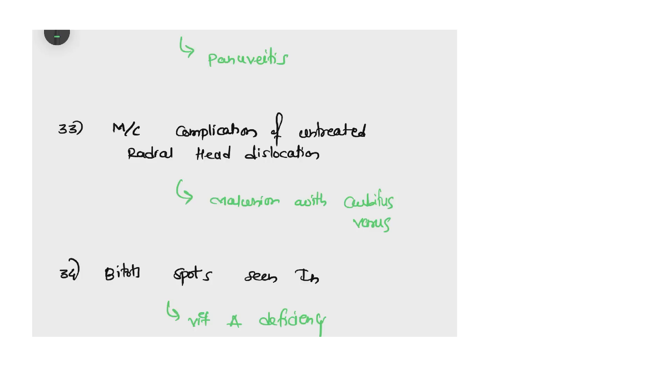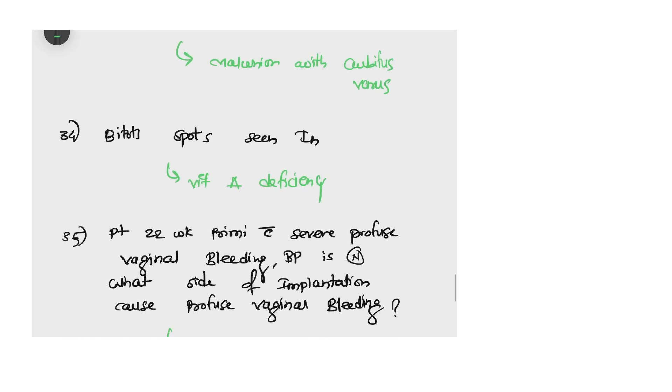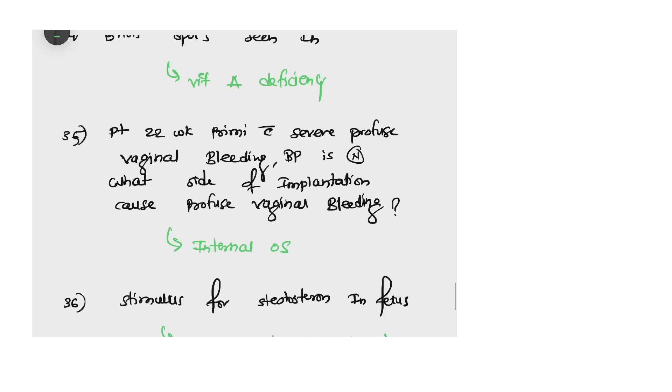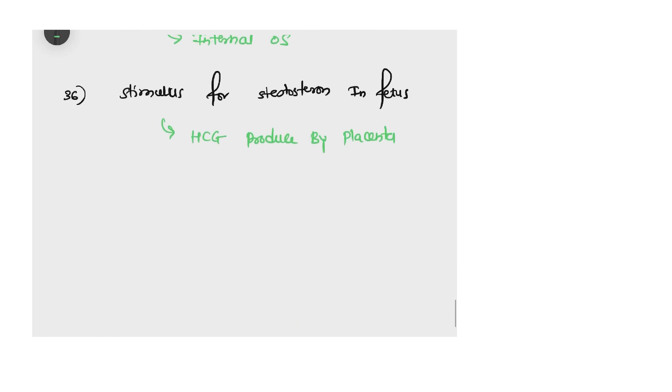Most common complication of untreated radial head dislocation? Images were given side by side. What is the answer? Yes, malunion with cubitus varus. Bitot's spot seen in? It is obvious - vitamin A deficiency was simple. Next question: patient 22 weeks pregnant with severe profuse vaginal bleeding, BP is normal. What site of implantation can cause profuse vaginal bleeding? The answer is internal os. Next question: stimulus for testosterone in fetus? It is due to HCG produced by placenta.